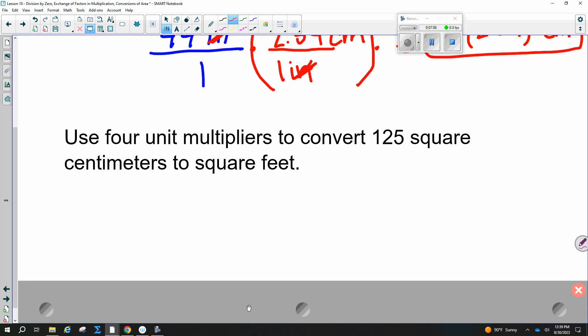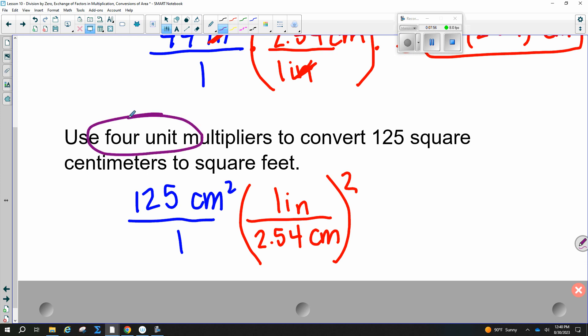Use 4 unit multipliers to convert 125 square centimeters to square feet. So we start with 125 square centimeters, which means centimeters squared over 1. We want to go to feet, but first we have to go to what? Inches. Good. So we're going to do a big set of parentheses instead of writing this down twice. So centimeters has to go in the bottom. So there are 2.54 centimeters equal to 1 inch, and the entire thing has to be squared.